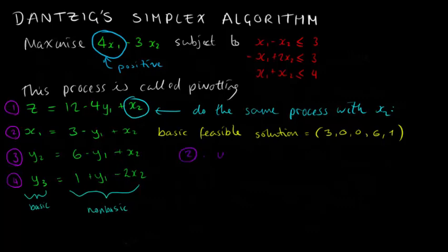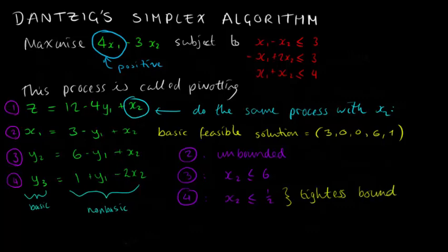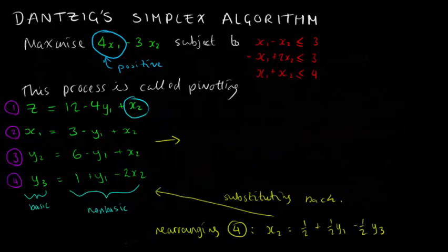we find that in equation 2, x sub 2 is unbounded, in 3 it's bounded by 6, and in 4 it's bounded by a half. We again choose the equation which gives the tightest bound, which in this case is equation 4 with a half, and rearrange it for x sub 2. Then we again substitute back into the system of equations.